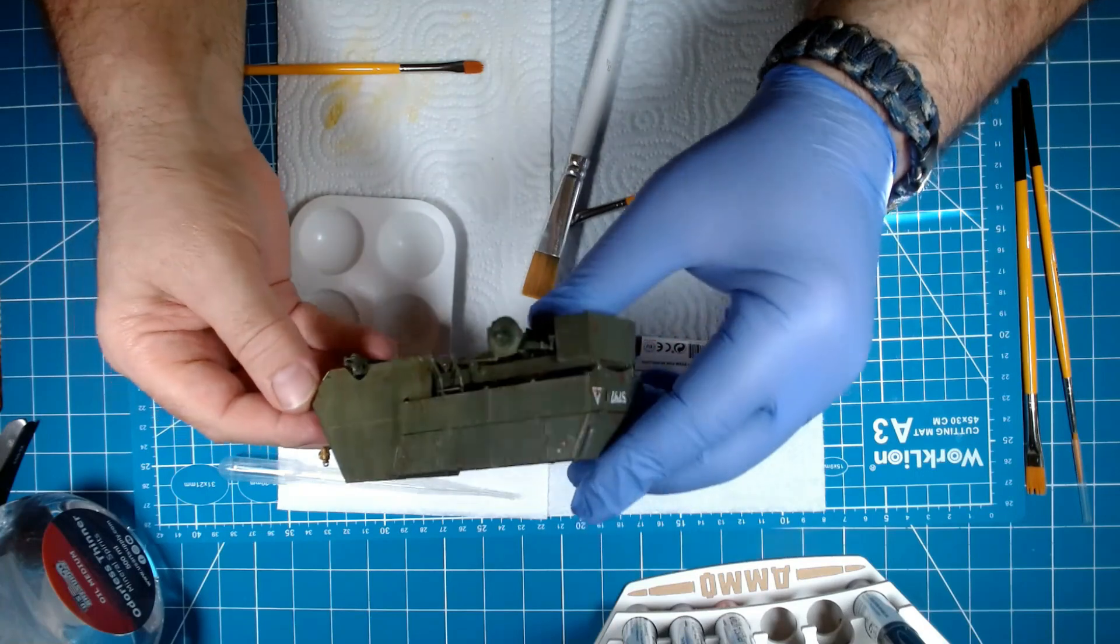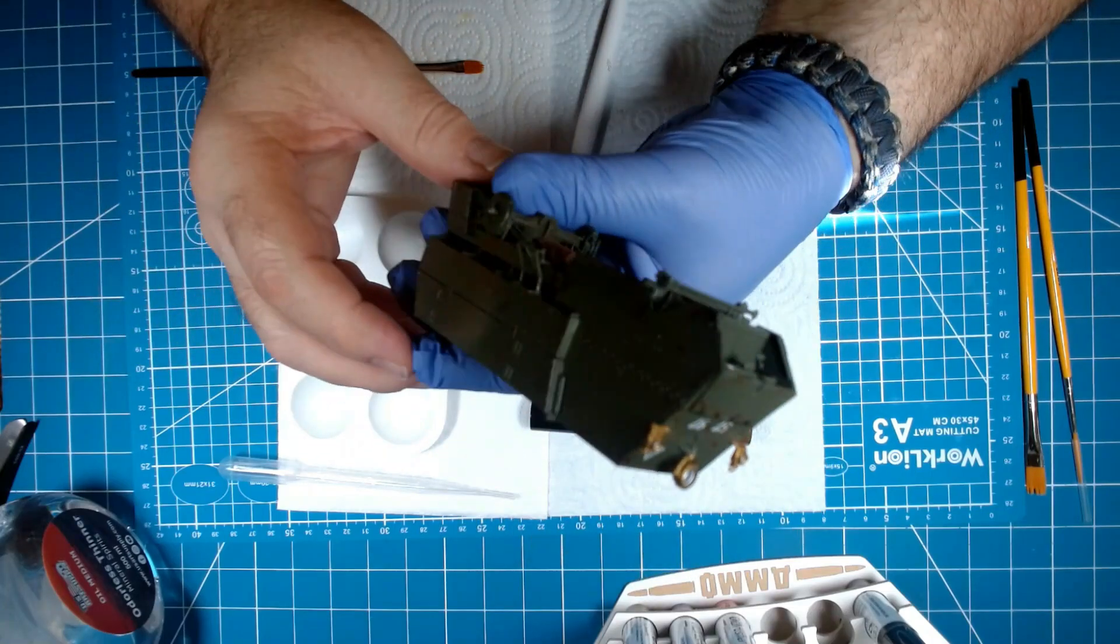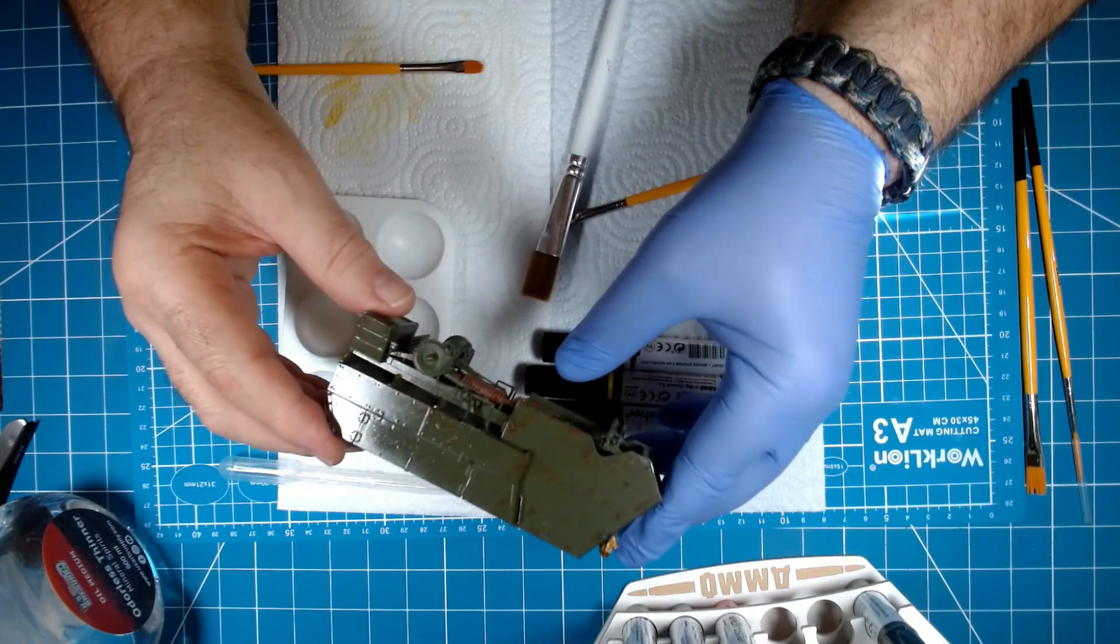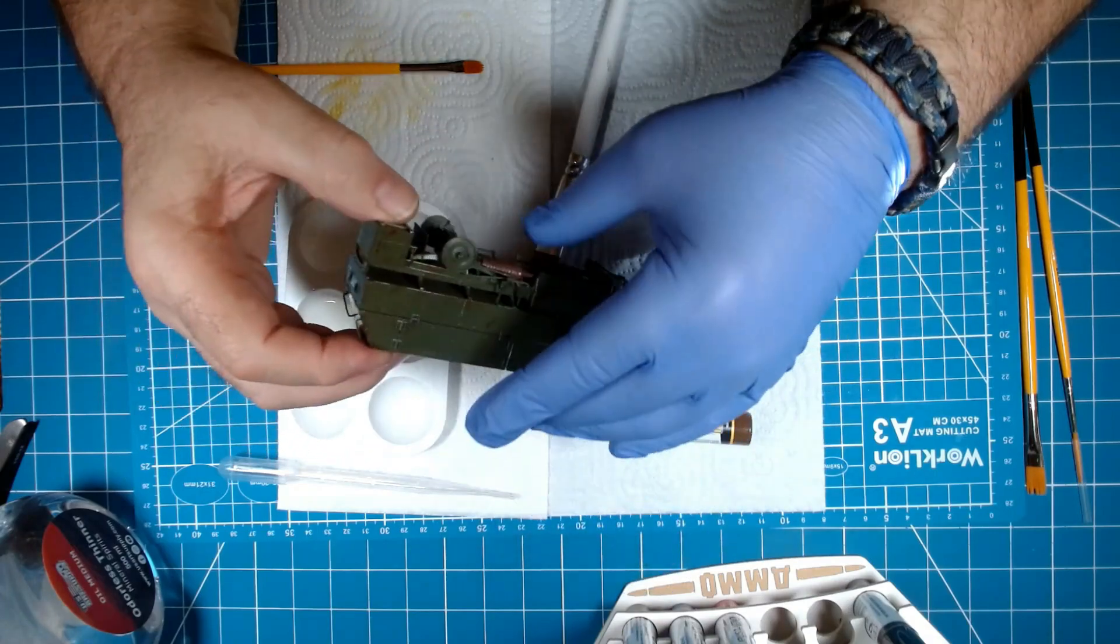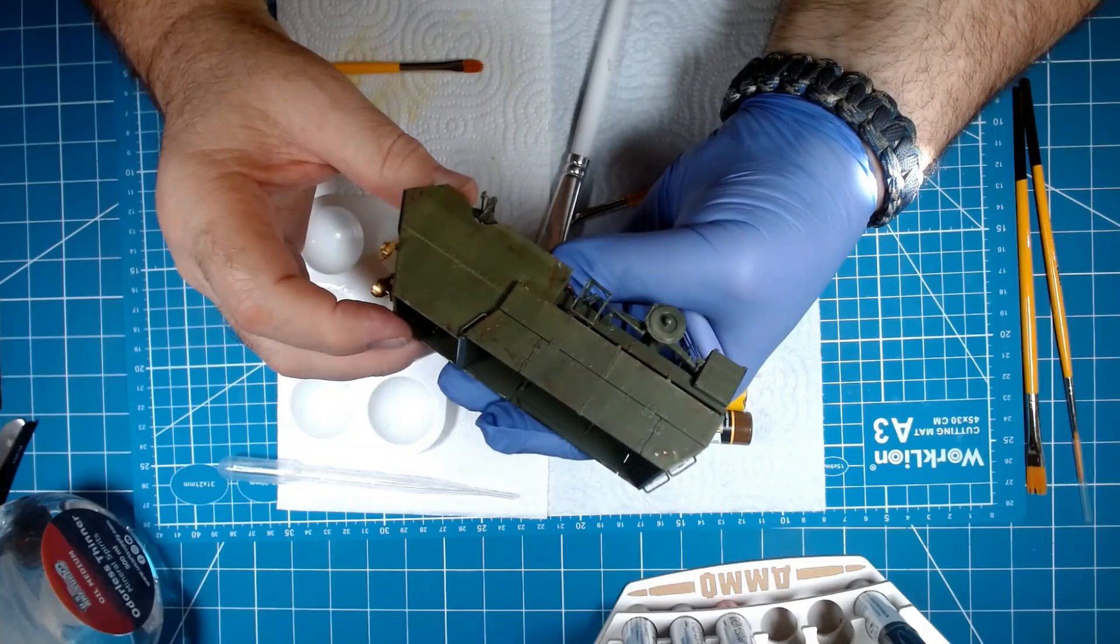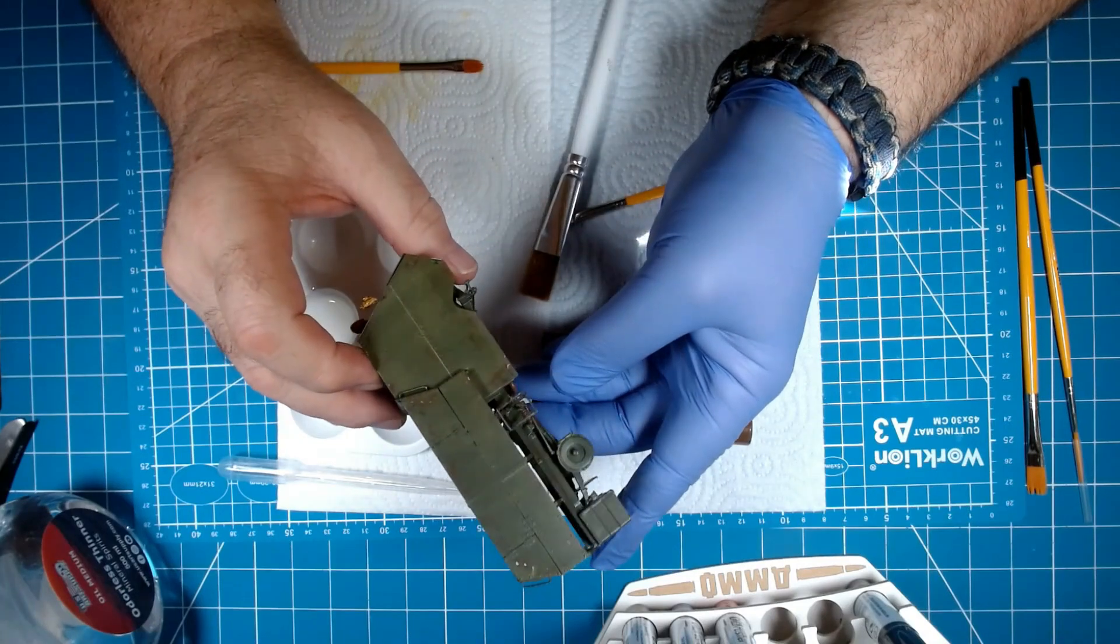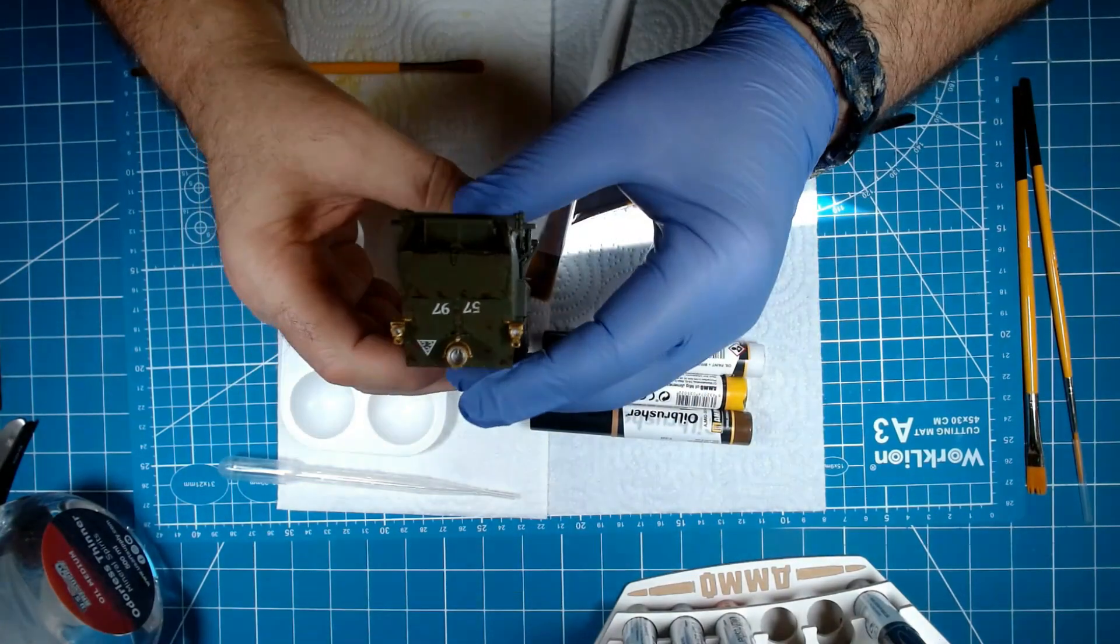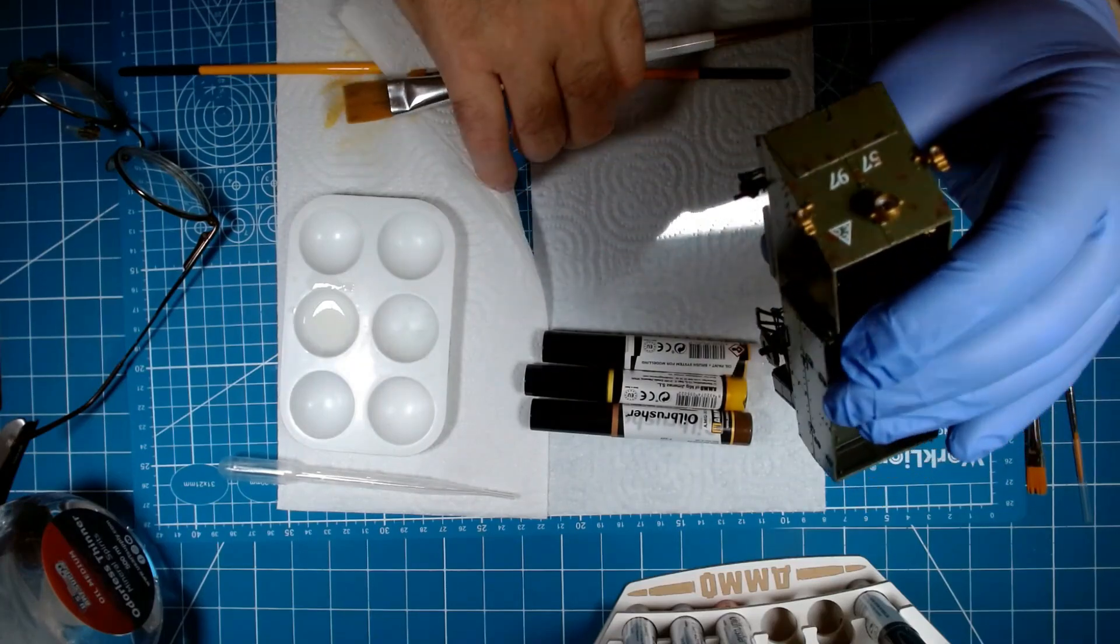Here you can see the difference. The right side has the oils on it and the left side does not. It's subtle, you can see it better in person, but I did chip both sides, you can see the chipping on there. But the right side with the oils on it looks a lot more weathered. I like the effect. It's just a matter of taking the time to do it.